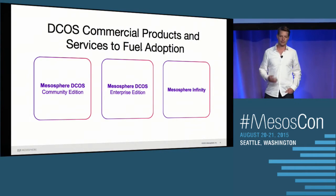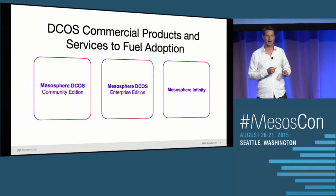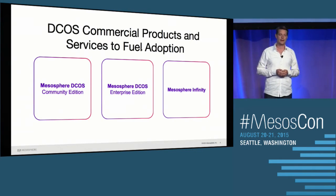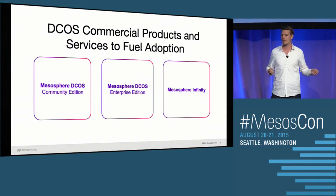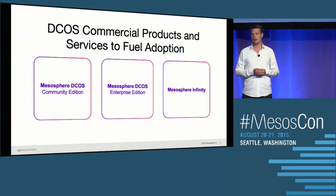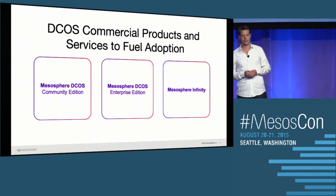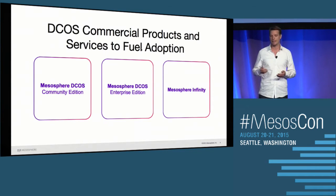DCOS comes in three flavors. There's a community edition which is completely free and offered on the cloud — on Amazon, Azure, and Google, with other clouds following soon. Then we have the enterprise edition, mostly for on-prem but also with some cloud customers, which comes with hardened security such as Kerberos and support from our engineers. And Mesosphere Infinity is actually the first vertical solution — a turnkey solution for IoT and big data specifically.